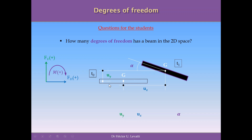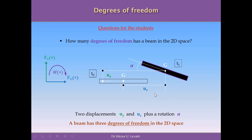We also need to apply a moment to produce a rotation and achieve the new position at time t1. This exercise shows that for every beam in the two-dimensional space, there are two possible displacements and one rotation. A beam has exactly three degrees of freedom in the two-dimensional space: two displacements and one rotation.